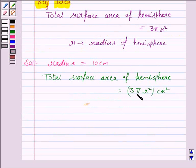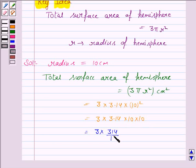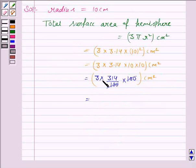Let us now substitute the values of pi and r in the formula. We have 3 times pi, pi is 3.14, times r squared. r is 10. This is equal to 3 times 3.14 times 10 times 10. And this is equal to 3 times 3.14 times 100. 10 times 10 is 100. This equals 942 cm squared.